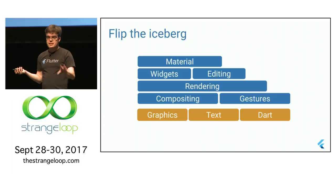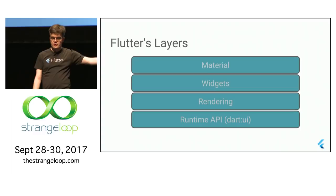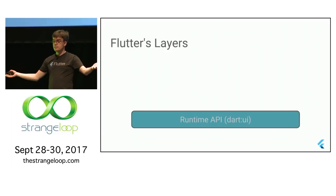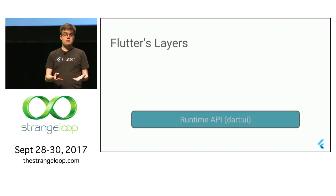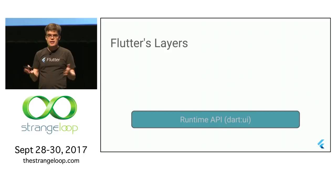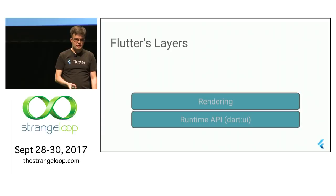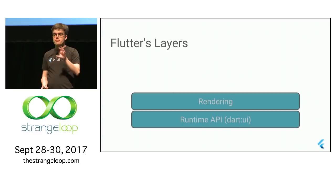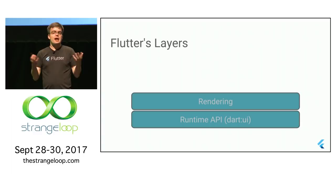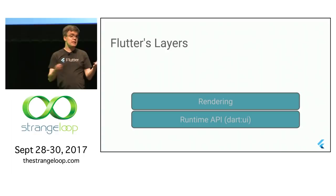We wanted to build a system that flipped the iceberg and put all the good stuff under your control in the same language you're writing in, so you can jump to definition all the way down. Here's a simplified layering diagram. At the bottom is our runtime API — `dart:ui` — which gives you a canvas, accessibility hooks, text layout, and some networking APIs. On top of that is a rendering layer — a stateful view model — whose job is caching, putting boxes on screen, layout, painting, and compositing.